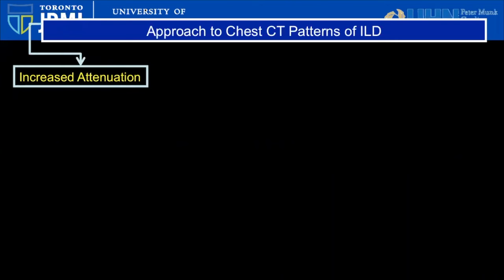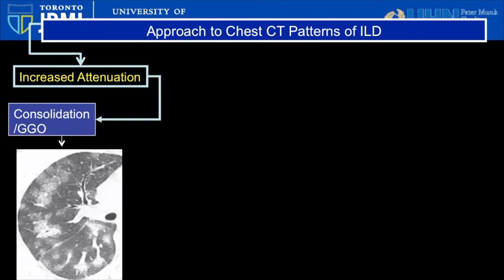First, look at the attenuation and notice if there are any areas of increased attenuation, namely consolidation and ground glass opacity. By definition, ground glass opacity is increased lung attenuation that does not obscure the underlying vascular anatomy. In contrast, consolidation is increased lung attenuation where the underlying vascular anatomy is obscured.